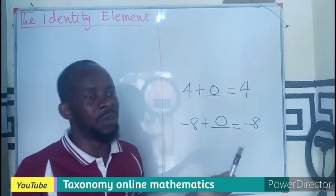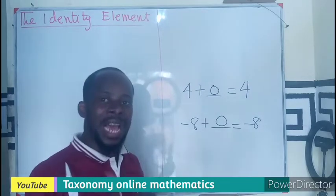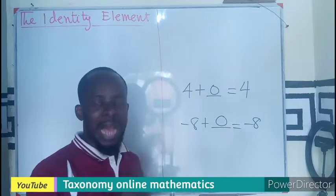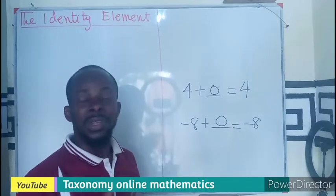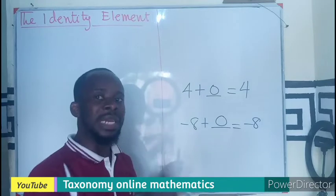So in real sense, we can say that the identity element of addition is always 0. 0 plus every number remains the number.